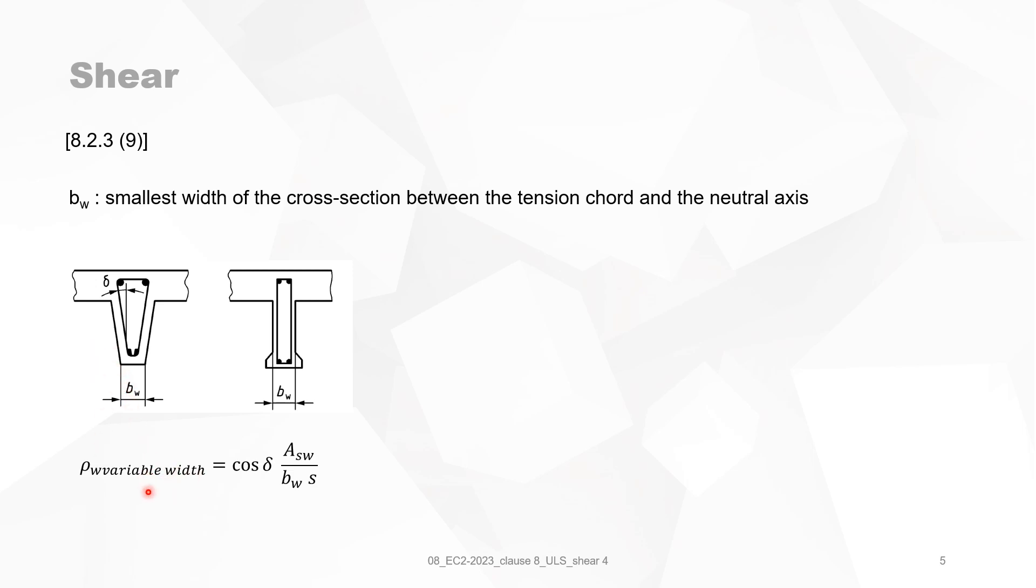It's also stated that the shear reinforcement ratio must be multiplied by the cosine of delta, which is the angle indicated on this drawing. Because of course delta is very small, in most cases, cos delta equals almost 1. But it allows you to take this into account, for instance, for 45 degrees or 30 degrees, it can have some impact.